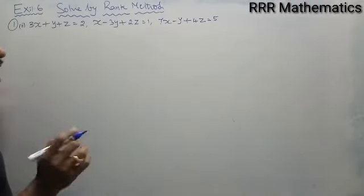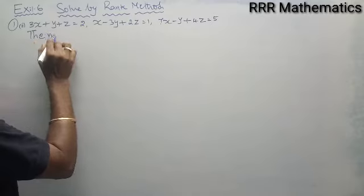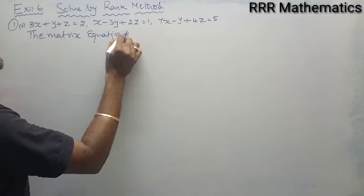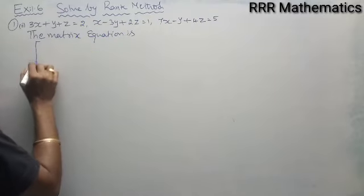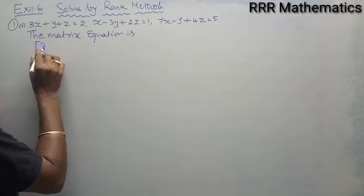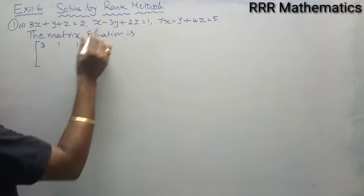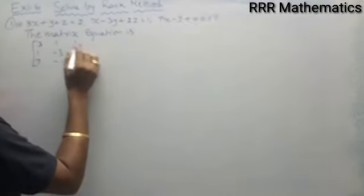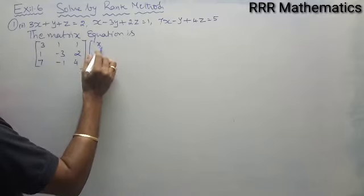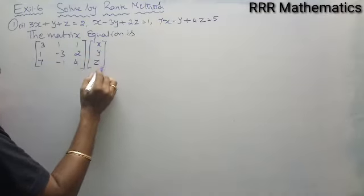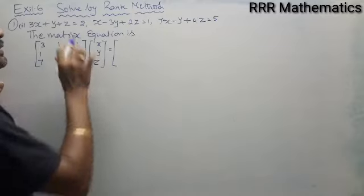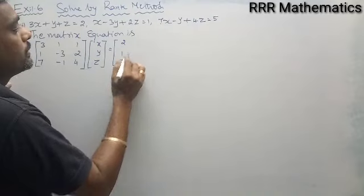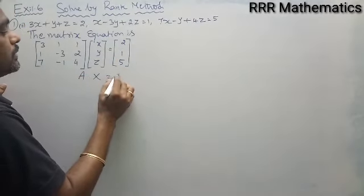The very first step is to write the matrix equation. Write all the coefficients in order for x, y, z: the matrix A is [3, 1, 1; 1, -3, 2; 7, -1, 4], and the variable vector is [x, y, z], equal to the constant values on the right-hand side, which are [2, 1, 5]. This gives us the matrix equation Ax = B.